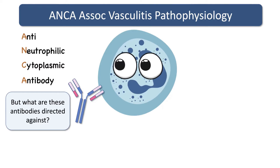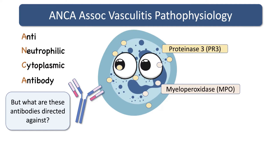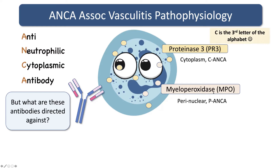But what are those antibodies directed against? There are two main things in ANCA vasculitis. There's proteinase 3, or PR3, and there's myeloperoxidase, MPO. Proteinase 3, or PR3, tends to hang out in the cytoplasm, so that's known as C-ANCA. And myeloperoxidase tends to be around the nucleus, so that's perinuclear, or P-ANCA. How are you meant to remember that? The answer is that C is the third letter of the alphabet, so C-ANCA goes with PR3. Too easy.